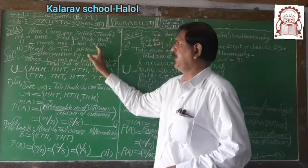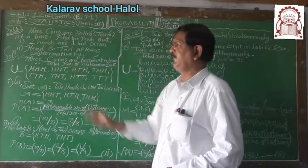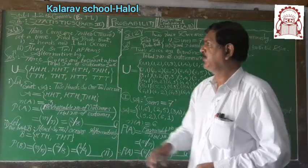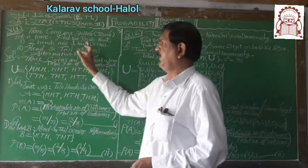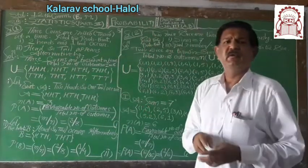2 heads and 1 tail occur, and head and tail appears alternatively. There are 2 events: Number 1, 2 heads and 1 tail. And another event, head and tail occur alternative.